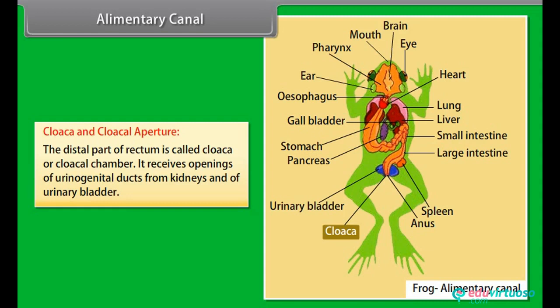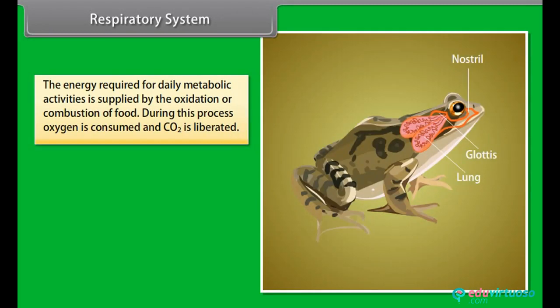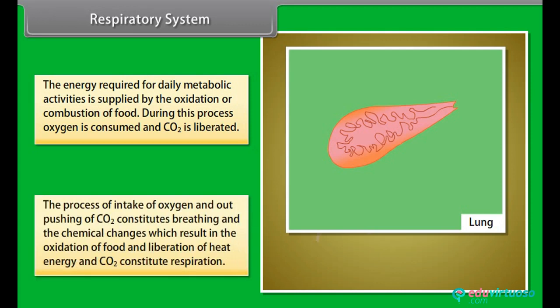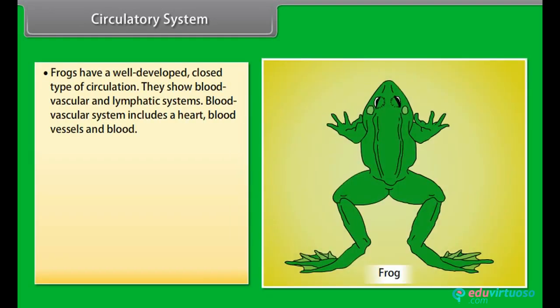The distal part of the rectum is called the cloaca or cloacal chamber. It receives openings of urinogenital ducts from the kidneys and of the urinary bladder. The energy required for daily metabolic activities is supplied by the oxidation or combustion of food. During this process, oxygen is consumed and CO2 is liberated. The process of intake of oxygen and output of CO2 constitutes breathing, while the chemical changes resulting in oxidation of food and liberation of heat energy and CO2 constitute respiration.